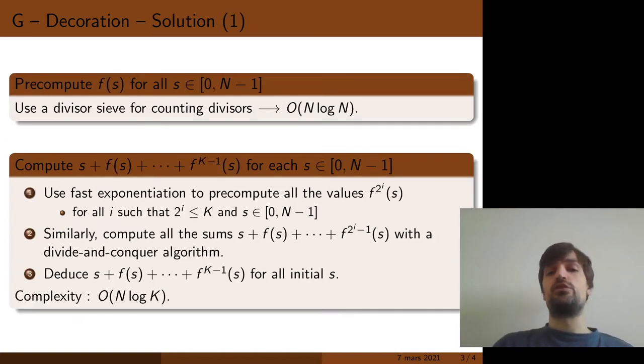So there are several solutions to this problem, I'm going to present one of them. In this solution, the first step is to precompute f for all integers between 0 and n-1. This can be done using a classical algorithm, a divisor sieve, in big O of n log n.